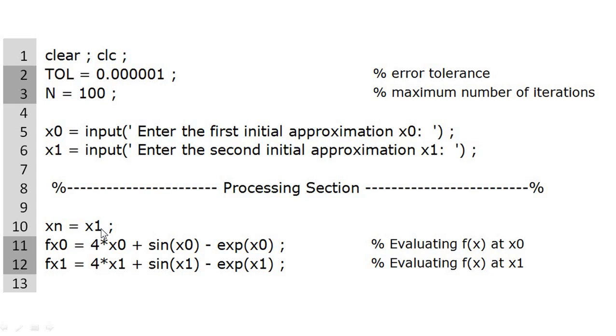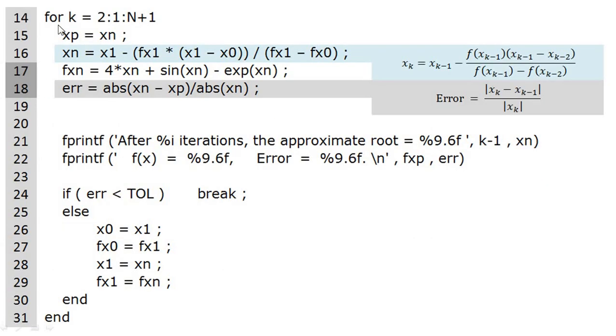First we copy one of the approximations to xn and we evaluate the function f(x) at x0 and x1 using these two statements. Now we come to the loop of iterations, k varying from 2 till N plus 1. We copy xn into xp and we use the iterative formula of the secant method to compute the latest root. Next we evaluate function value at the latest root xn. xn is our latest root and xp our root from the previous iteration.